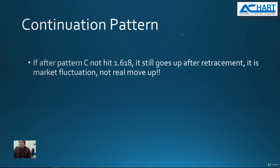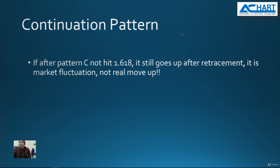If after the continuation pattern it does not hit 1.618 and it goes up after the retracement anyway, that is the result of market fluctuation — it is not the real move up. If you still have positions, you are looking to sell. Take this opportunity that the market wants to give you extra money, because this does not comply with our rules. You are looking to sell when it moves up, because it is an opportunity to sell at a higher price — and again, it is not a real move up.